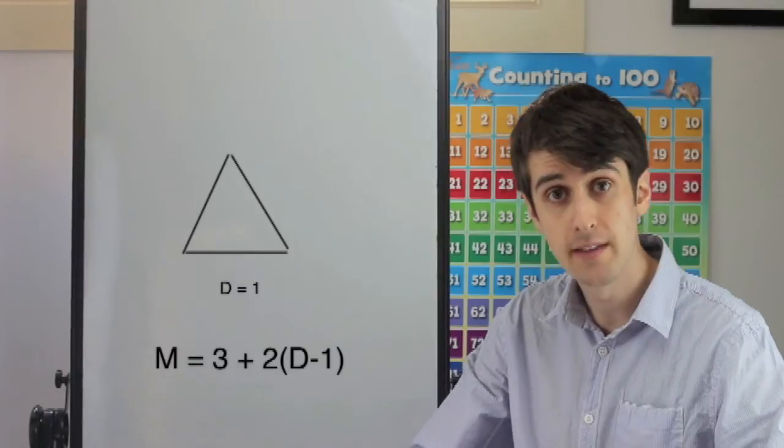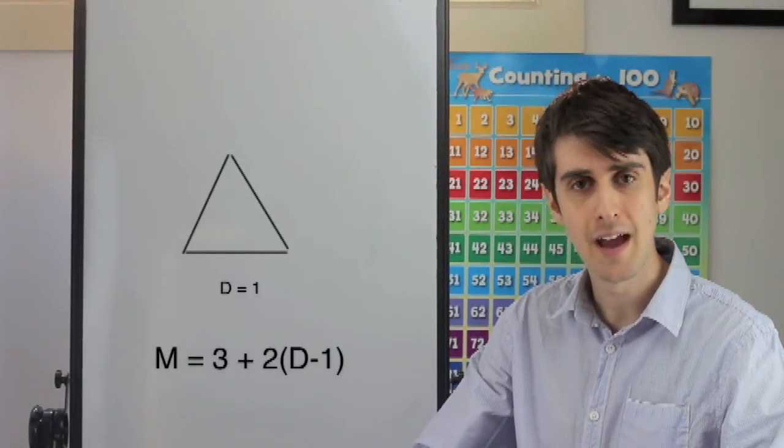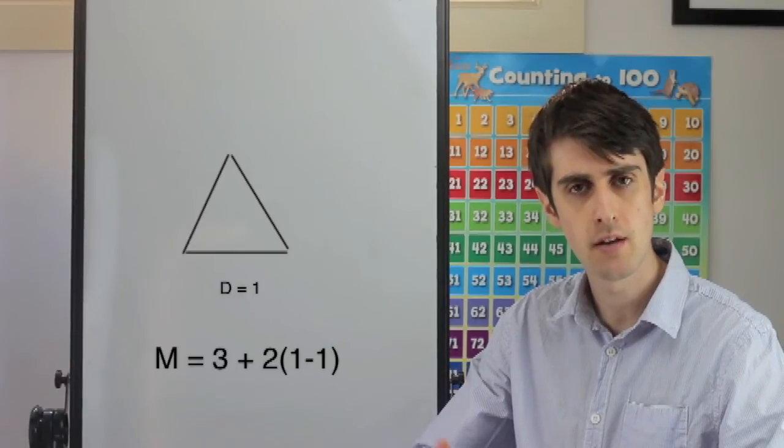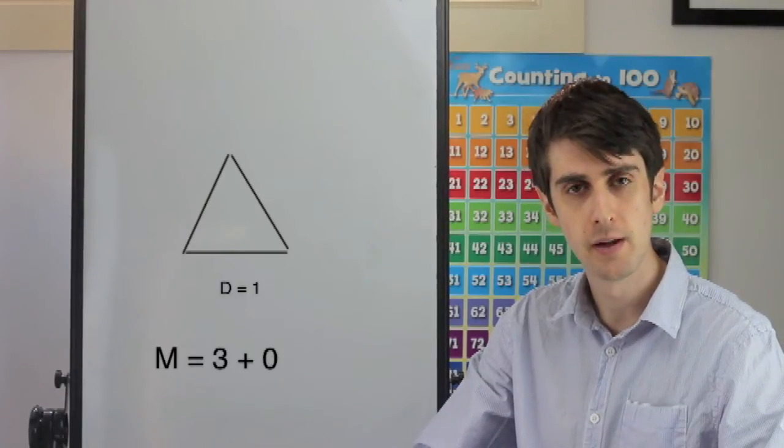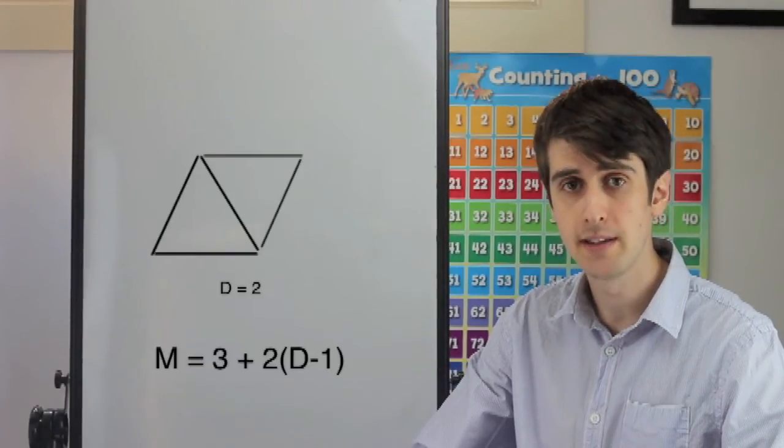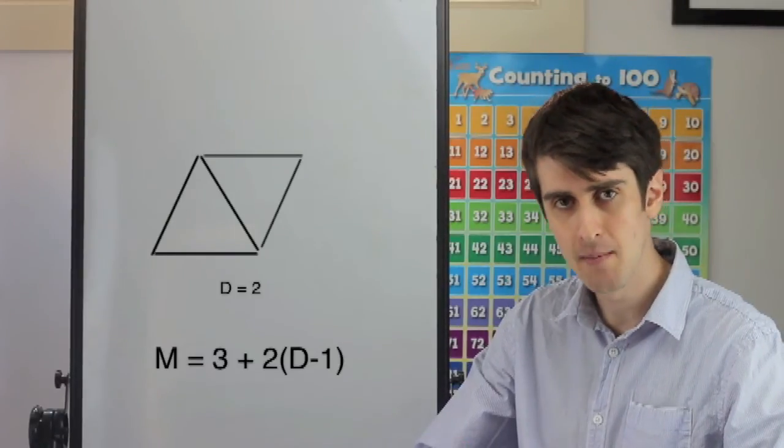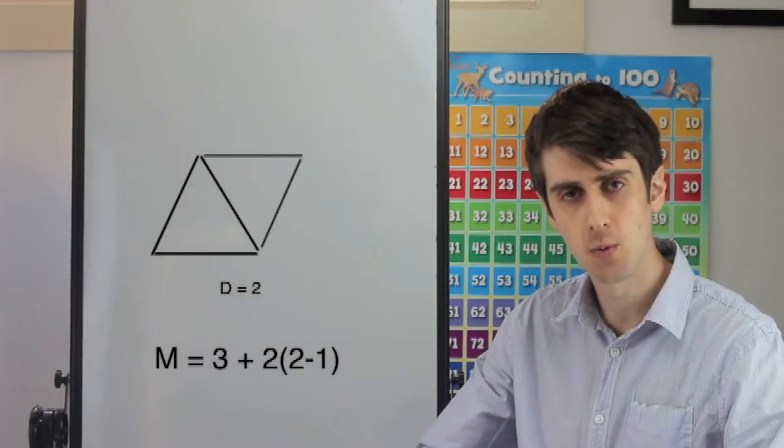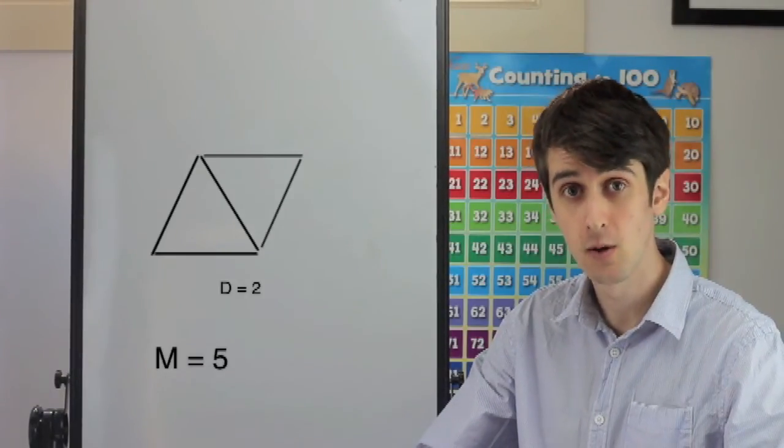For the first diagram, where d equals one, then m will equal three plus two times one minus one. This will equal three, which is correct. For the second diagram, where d equals two, then m will equal three plus two times two minus one, which is five. Also correct.